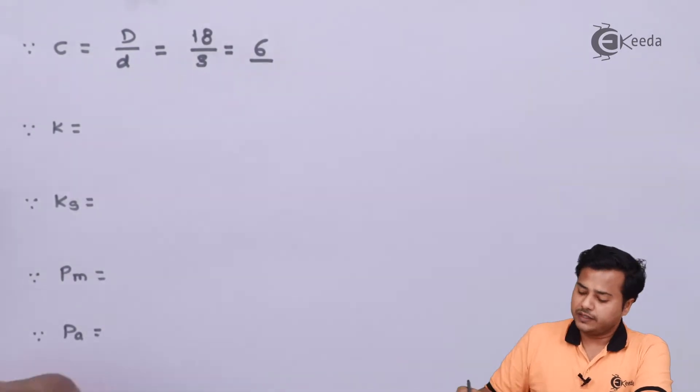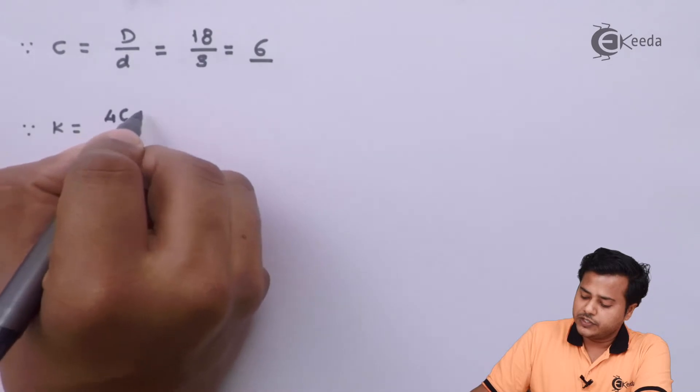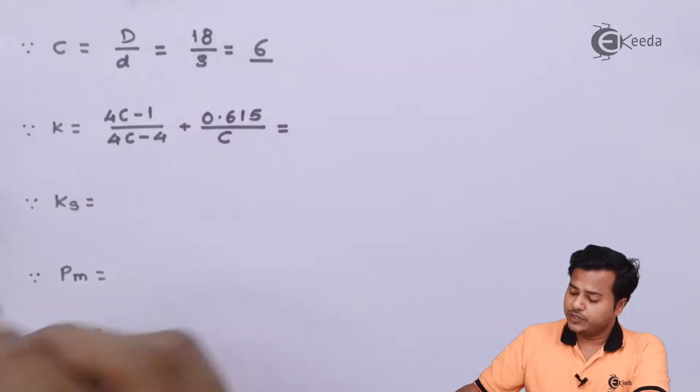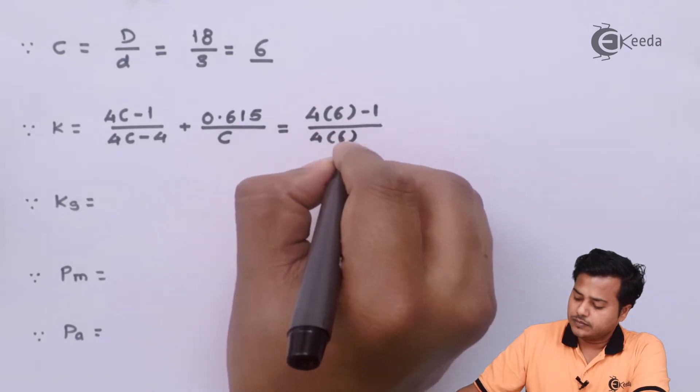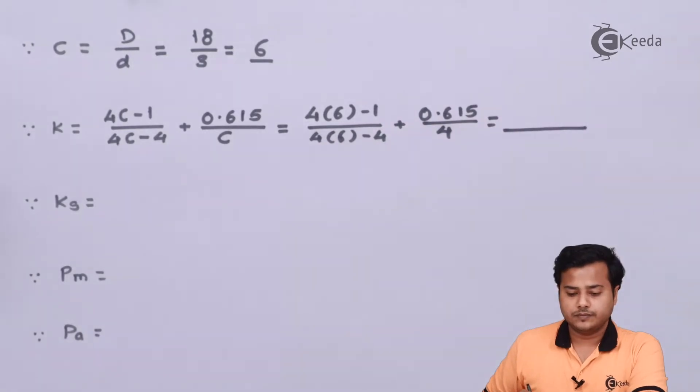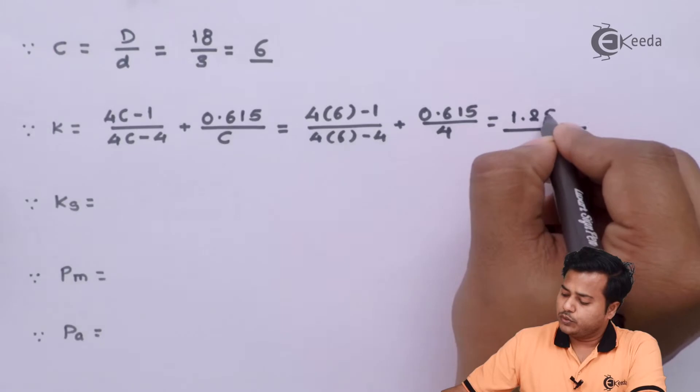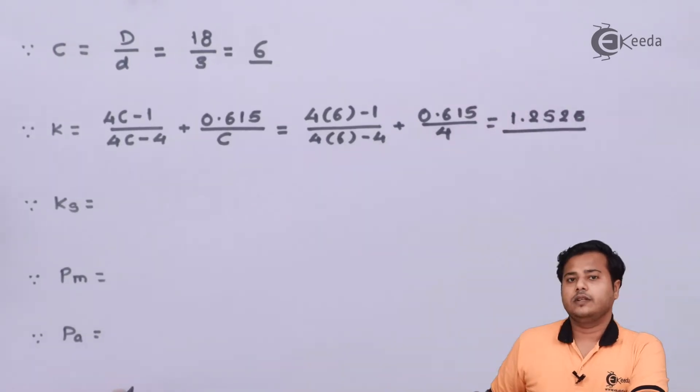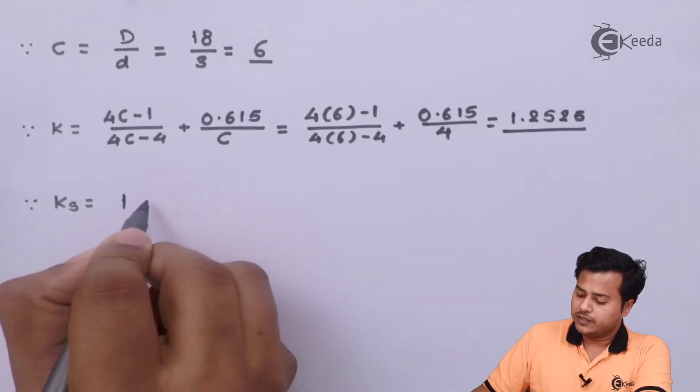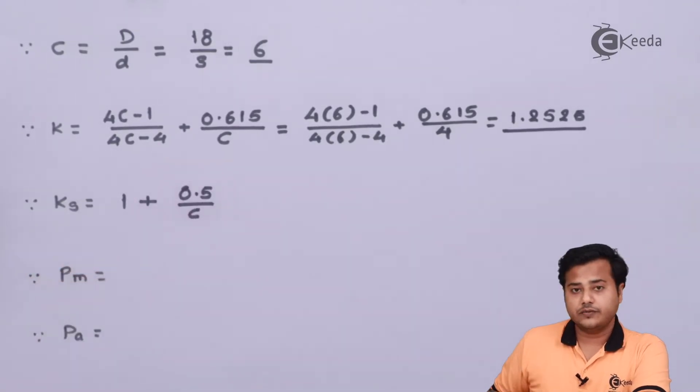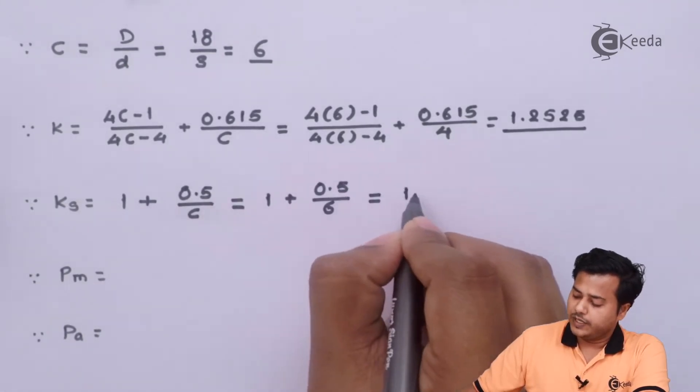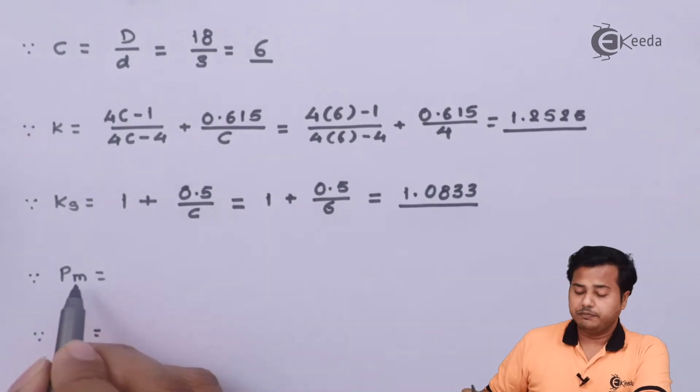The next factor is Waal's correction factor and that is given by this particular equation. After substituting the values, we get the value somewhere comes out to be 1.2525. Let us move ahead with finding the next factor Ks. We know that the relation is given and it says that this is the formula.